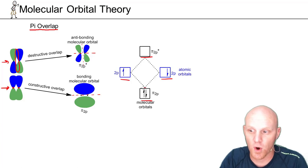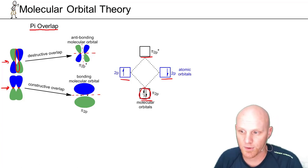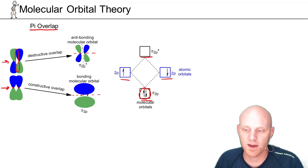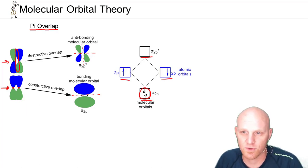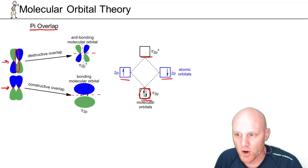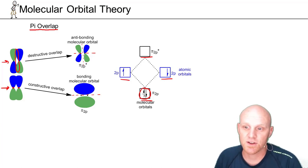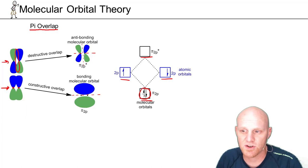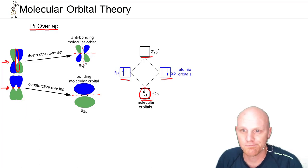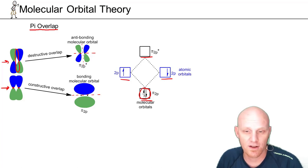With only two electrons filling the pi system, you're only going to fill up the bonding molecular orbital. Bonding occurs because overall the energy of the electrons decreases as a result. Pi overlap is something we will revisit later in the course when we discuss conjugated pi systems, though molecular orbital theory won't be discussed much outside of that context.